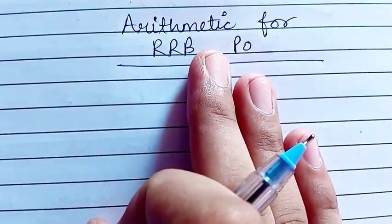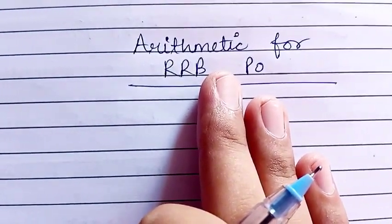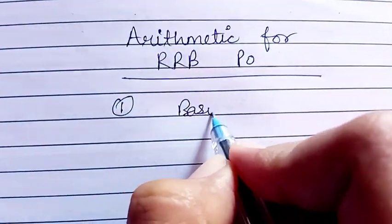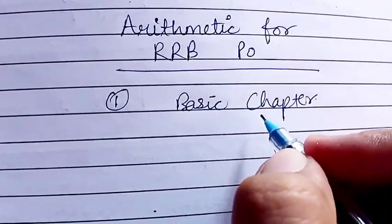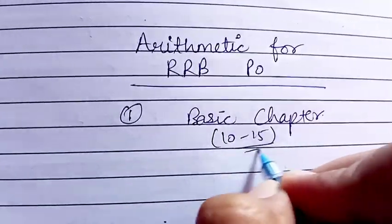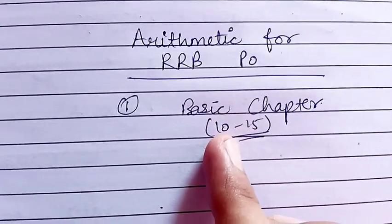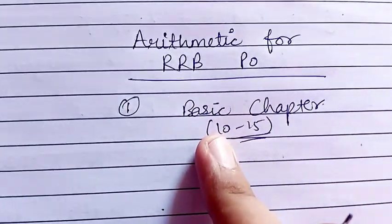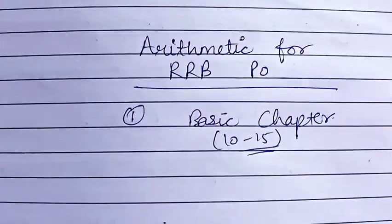First of all, for doing arithmetic, you should start with the basic chapters like simplification, approximation, and number series. After understanding the basics, you should daily practice 10 to 15 questions from each of these four chapters: simplification, approximation, number series, and quadratic equations. Always solve 10 to 15 questions from these chapters on a daily basis.